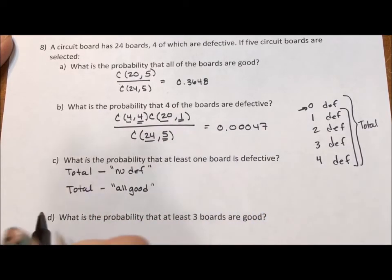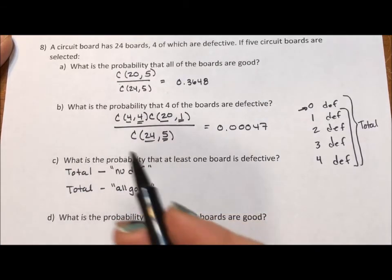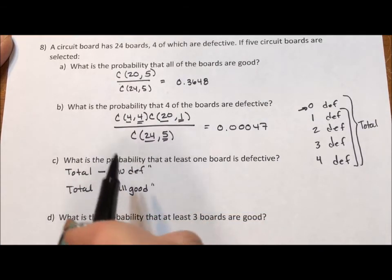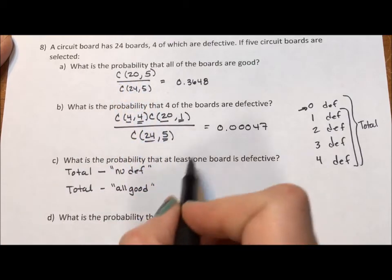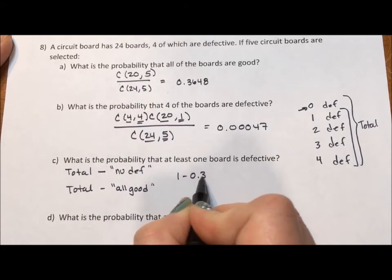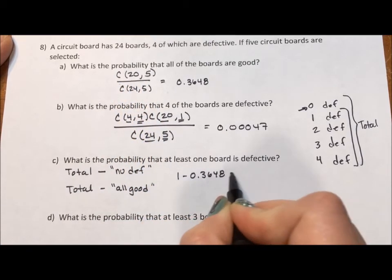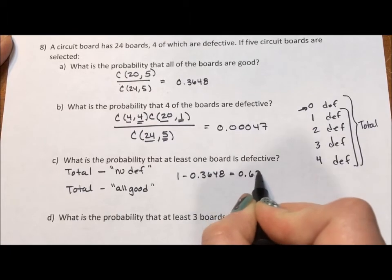The total I'm really going to do is in probabilities, I'm going to do 1 minus the probability of. Now, I could be really clever since I've already done this calculation and just say 1 minus 0.3648 equals 0.6352.